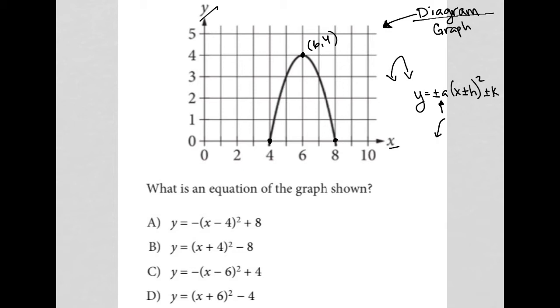I also know that (h, k) represents the vertex. That tells me that h is 6 and k is 4. So I know I have y = negative—I don't know what a is quite yet—but I do know I'll have an x.